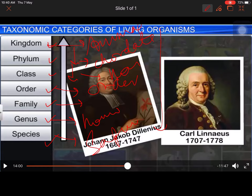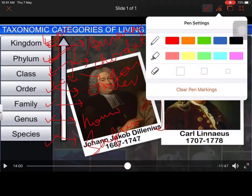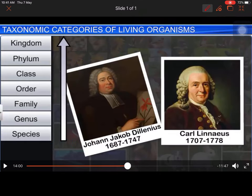For example, if we ask what similarity exists between humans and horses, we can say our kingdom is the same and our phylum is the same, but below that they differ. If we ask about similarity between humans and chimpanzees, our kingdom, phylum, and class are the same, but differences appear at the order level. Thus, by maintaining a hierarchy, we can identify what is similar and what is different between any two organisms.